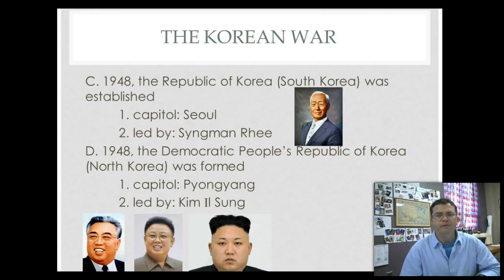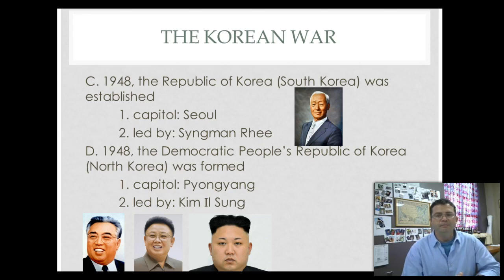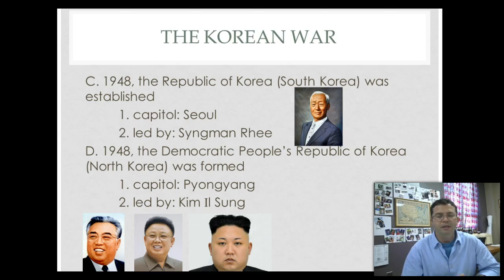In 1948, with the development of the Republic of Korea, we see South Korea being led by Syngman Rhee, with the capital of Seoul. Also in 1948, the North Koreans created the Democratic People's Republic of Korea with communist sympathies.